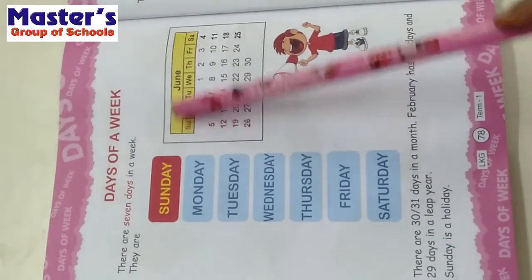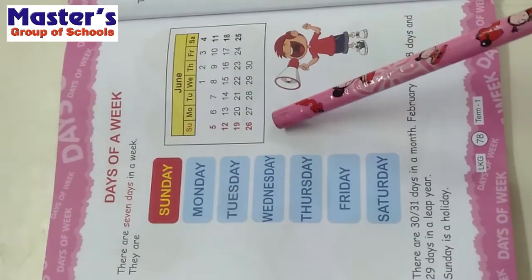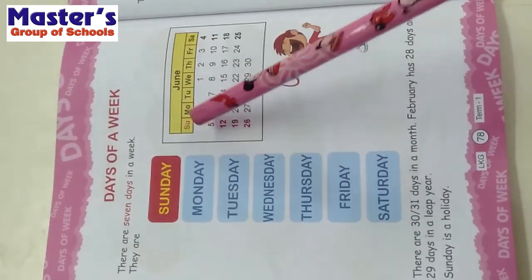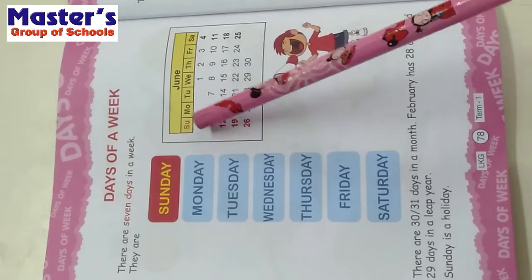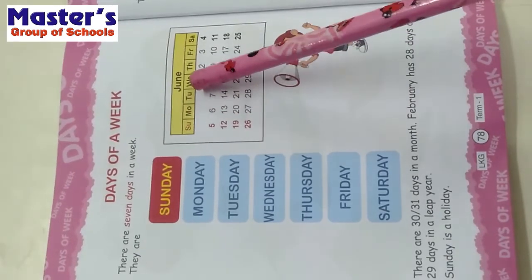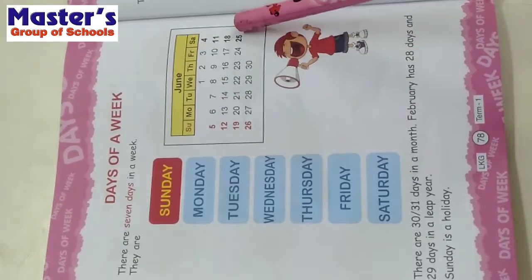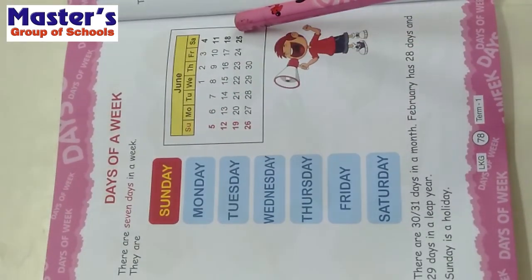See, this is a calendar. In this calendar we are having 1, 2, 3, 4, 5, 6, 7 days in a week.